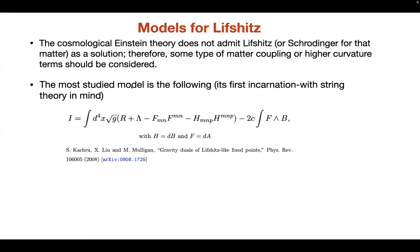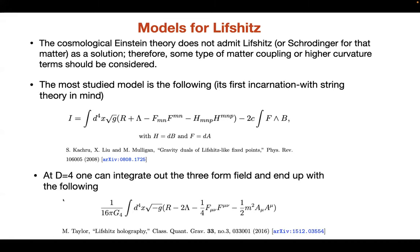The most studied model is the following. You have a two-form and a three-form coupled to each other, and this admits a Lifshitz solution. Later this was shown to be equivalent — you can integrate the three-form — and at four dimensions you have the Proca action. The Proca model is quite nice because it is simple to study and has nice properties related to compactifications, since Chern-Simons couplings and massive vector fields usually arise in string theory compactification. So you have a relation with higher dimensions.